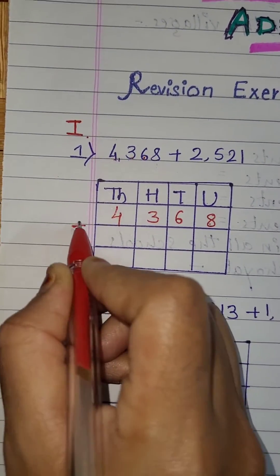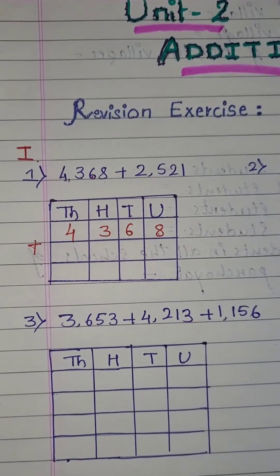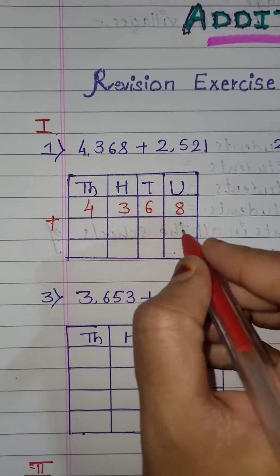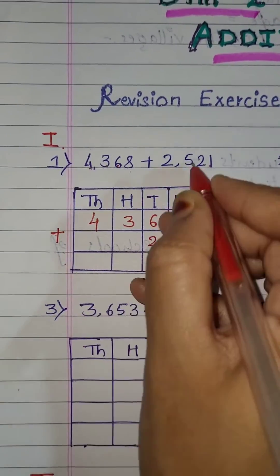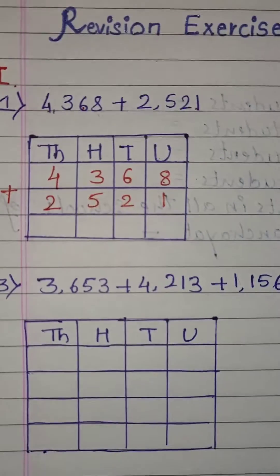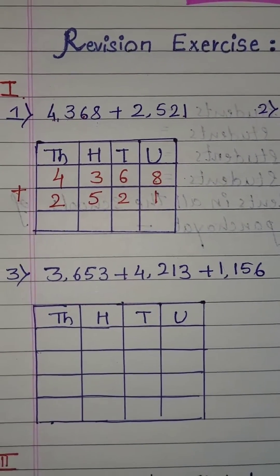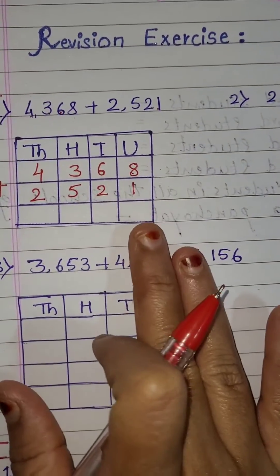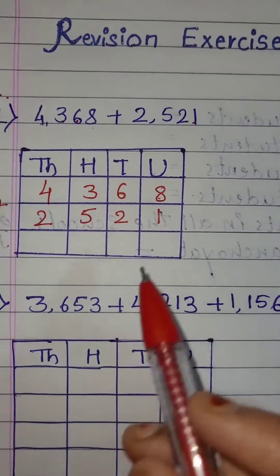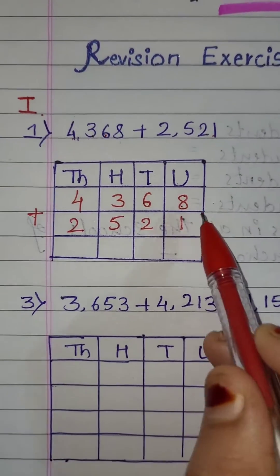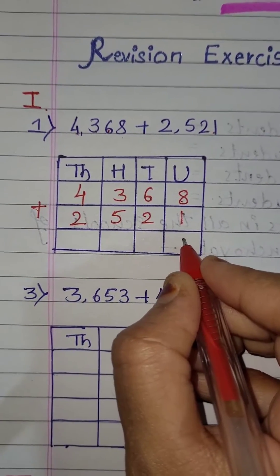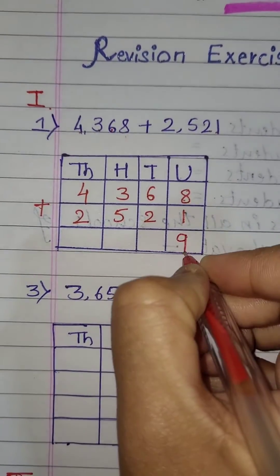Then I will put the addition mark. Now the second number: 1 is in the units place, 2 in the tens place, 5 in the hundreds place, and 2 in the thousands place. Now let's add. Always start adding from the right side — from the units place. 8 plus 1 is 9. I am going to write 9 here.